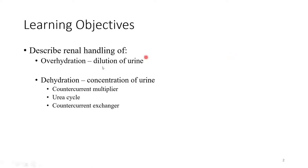The learning objectives are: the renal response to over-hydration and the renal response to dehydration. As you can see, the over-hydration response is straightforward, but the dehydration response involves all sorts of mechanisms that will take the bulk of this video. Under dehydration, we'll be studying the counter-current multiplier, the urea cycle, and the counter-current exchanger.